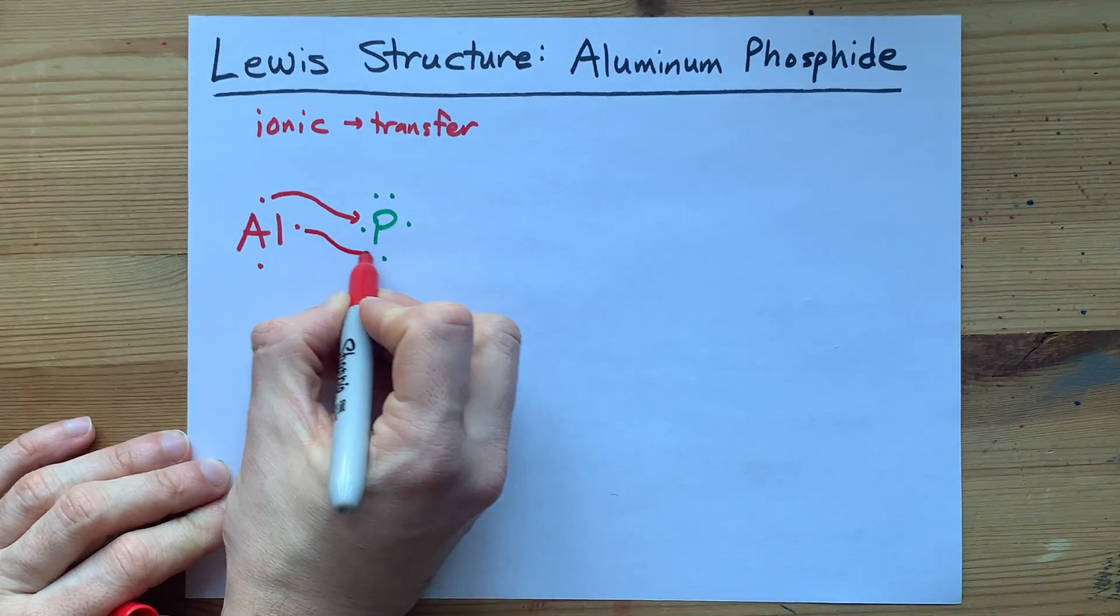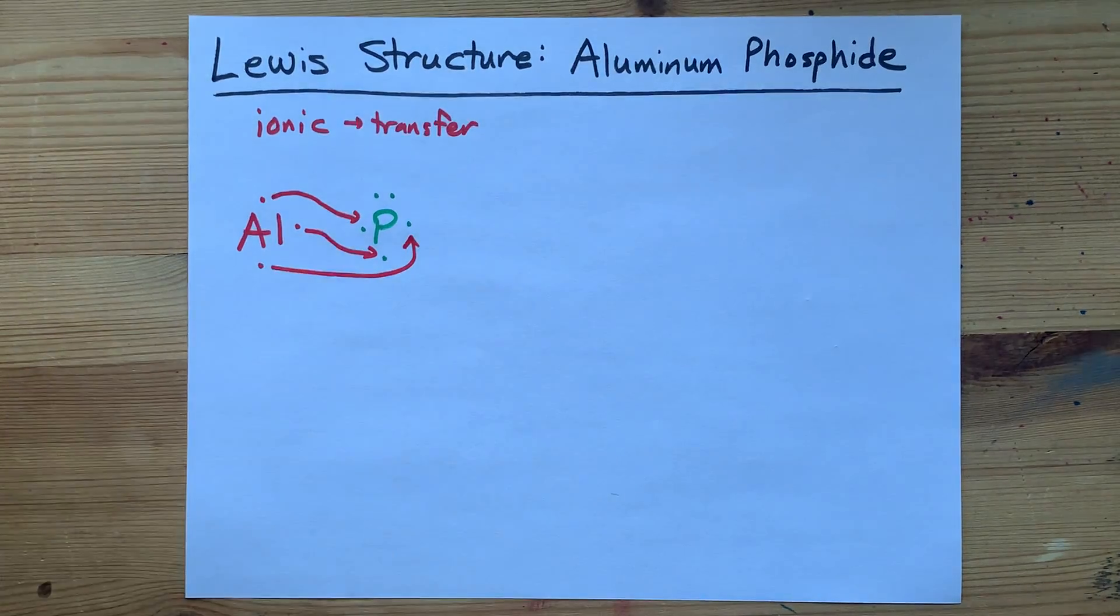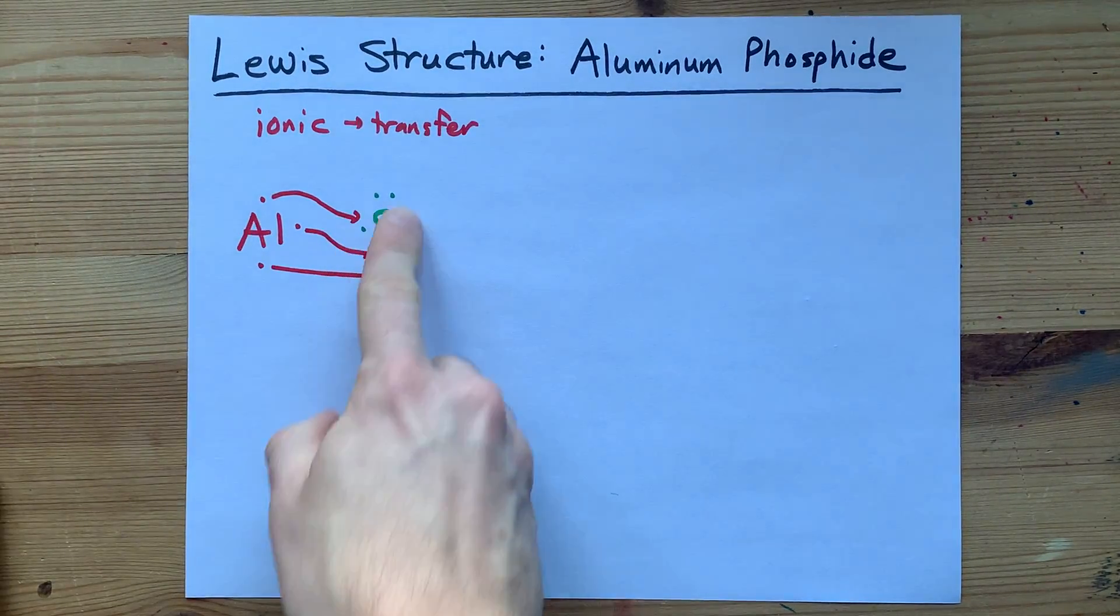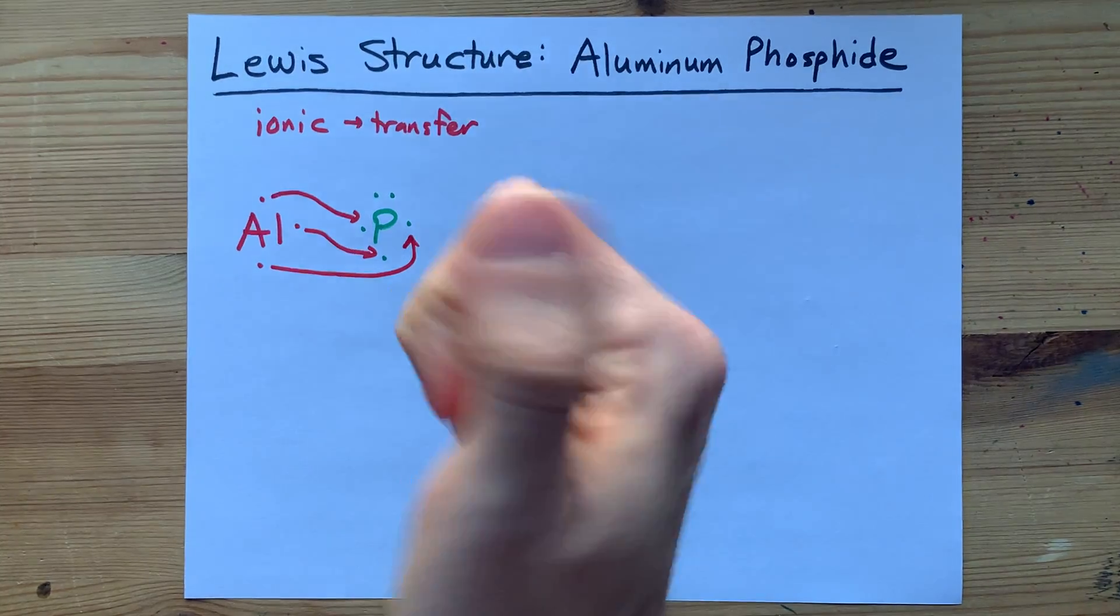There's one, there's two, there's three electrons given away. Phosphorus now has eight electrons in its outer shell.